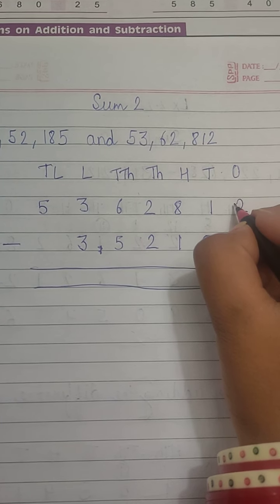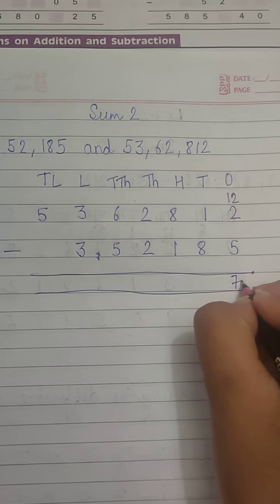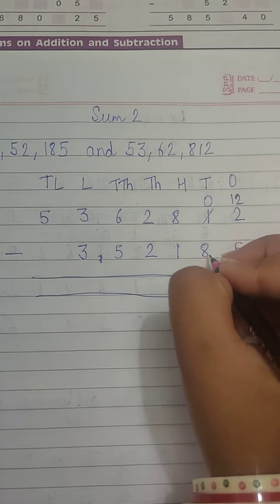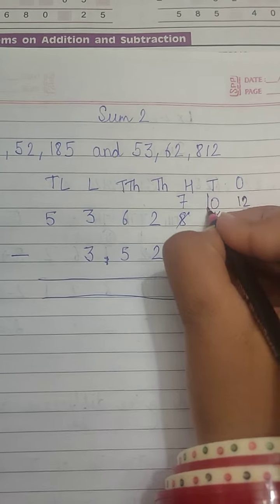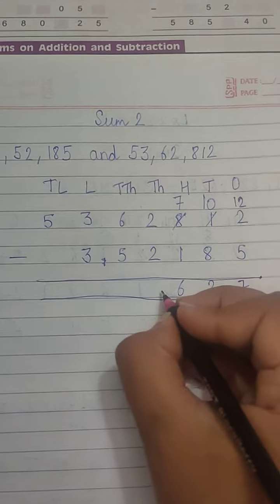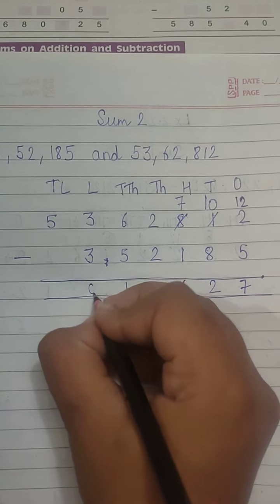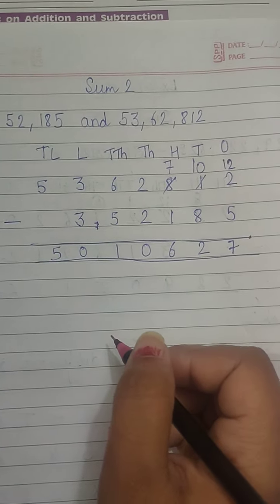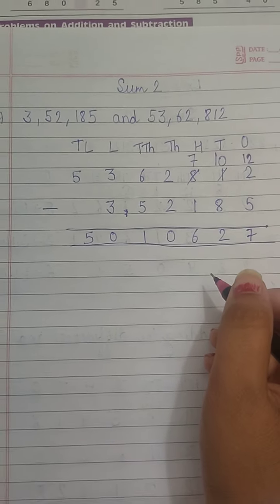So this will become 12. 12 minus 5 will be 7. Here we are left with 0. We can't subtract 0 from 8, so we take 1 — here we are left with 7 and here ten. 10 minus 8 will be 2. 7 minus 1 will be 6. 2 minus 2 will be 0. 6 minus 5 will be 1. 53 minus 3 will be 0. And here we have 5. Now you can try these questions as well — this is sum 2a.